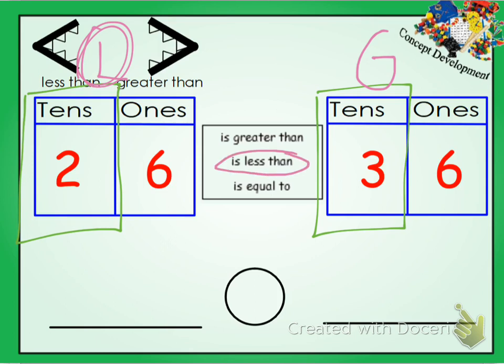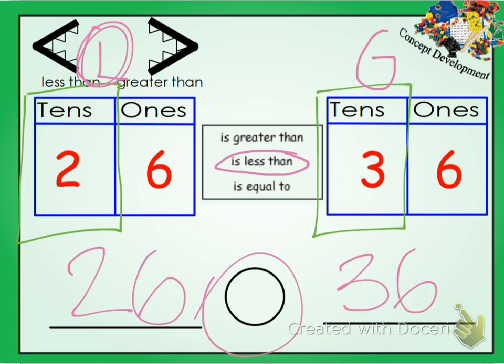Now we have to show this with the symbol. So I'm going to write the two numbers. 26, I'm keeping it the same way. Since 26 was on the left of the phrase, I'm going to keep it that way. Since 36 was to the right of the phrase, I'm going to keep it to the right of this circle. That's right here.